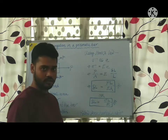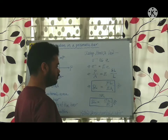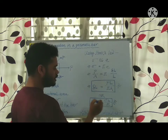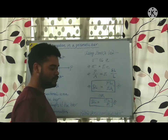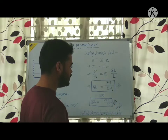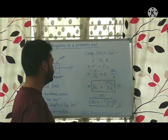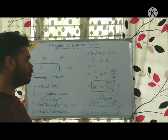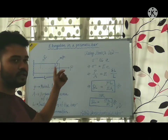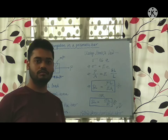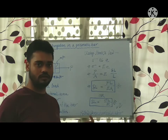Since P by A is nothing but your sigma, delta L will be sigma L upon E. This is the important formula to find out the axial deformation in a prismatic bar due to application of a load in its axial direction. I hope you understand this formula, thank you.